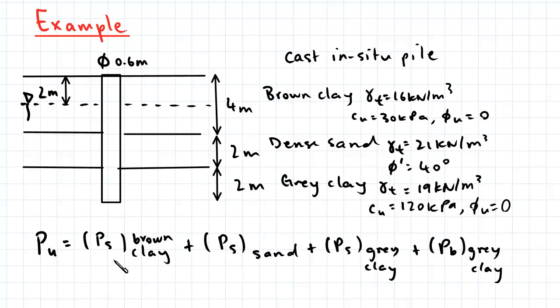PS corresponds to the total shaft resistance and PB corresponds to the total base resistance.